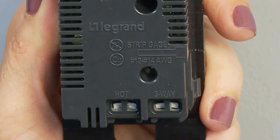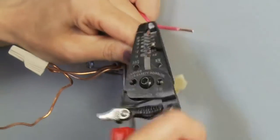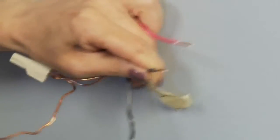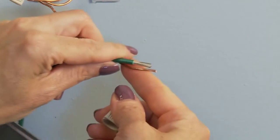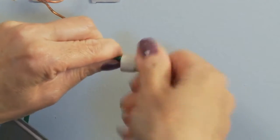Consult the wire strip gauge located on the back of the device and strip all wires to the appropriate length. Attach the ground wire on the frame to the bare ground wire in the wall box.